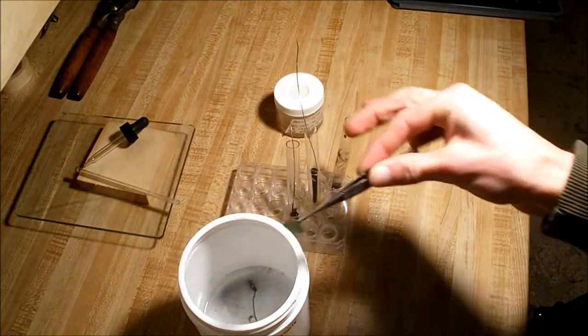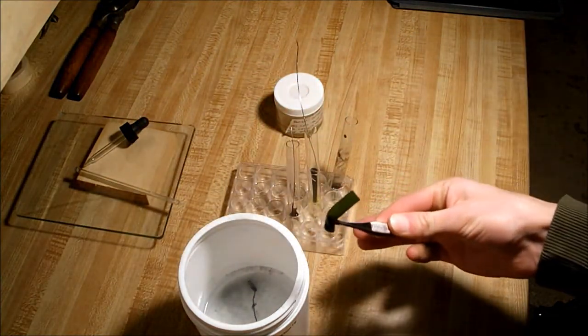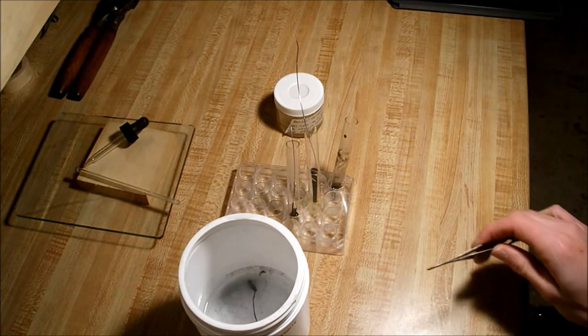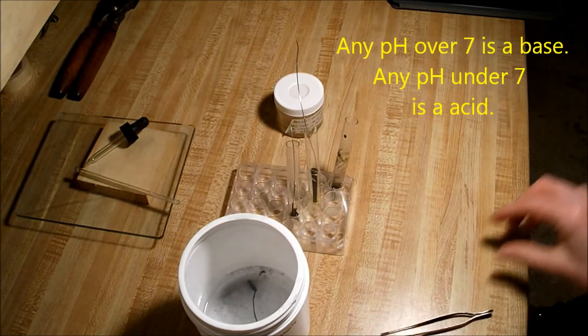As you can see, it's turned a nice olive green, which means it's, with this brand of pH paper, which means it has a pH of about eight and a half, nine, maybe nine and a half.